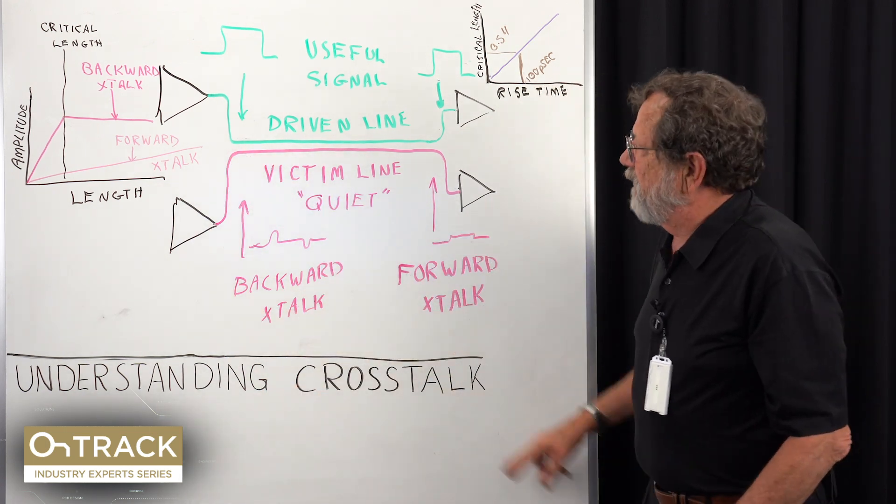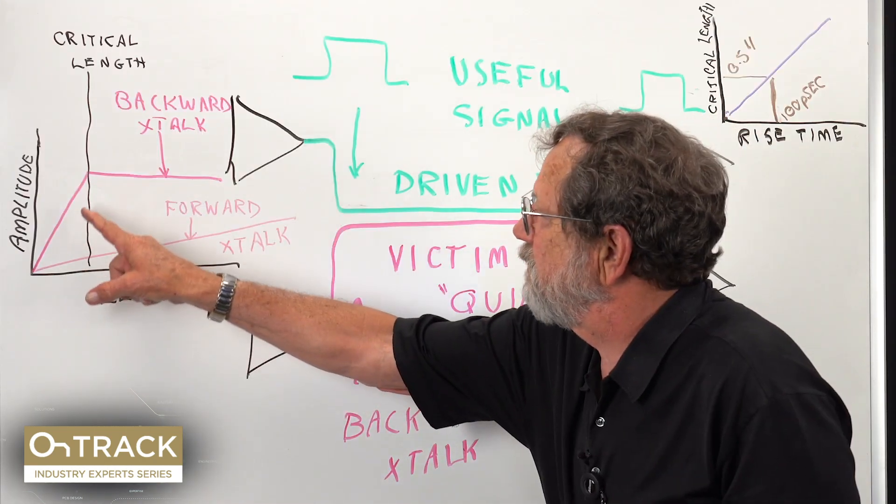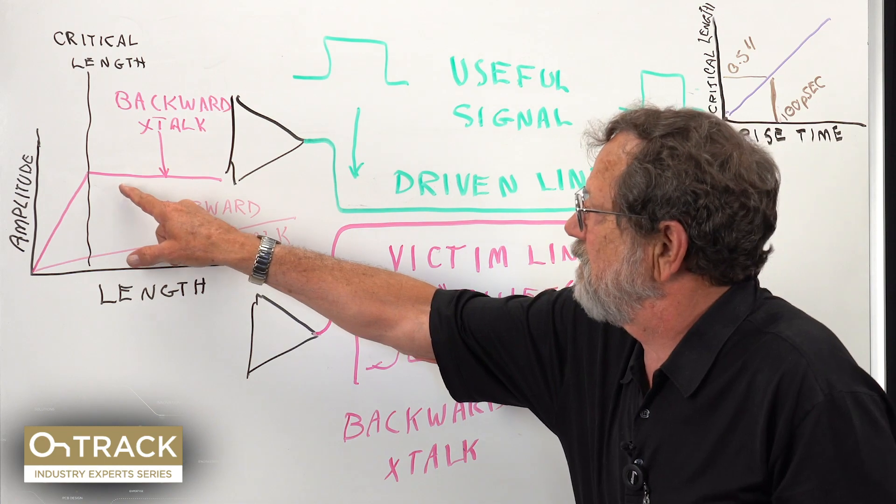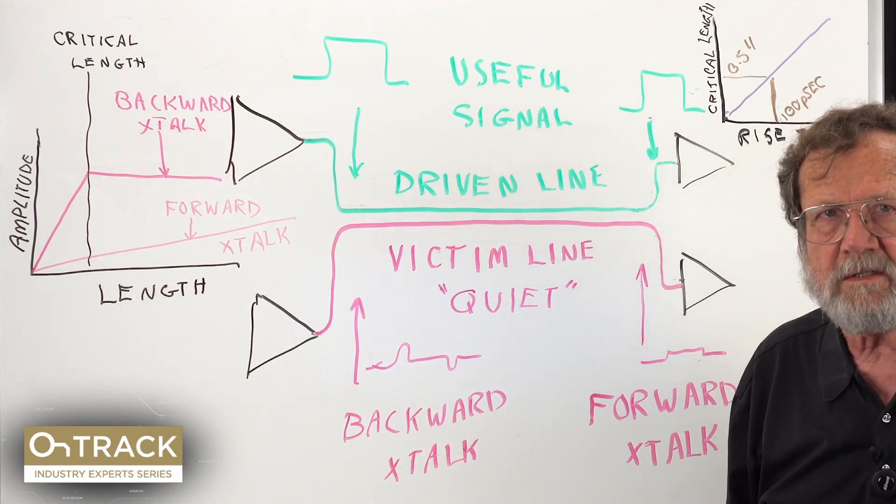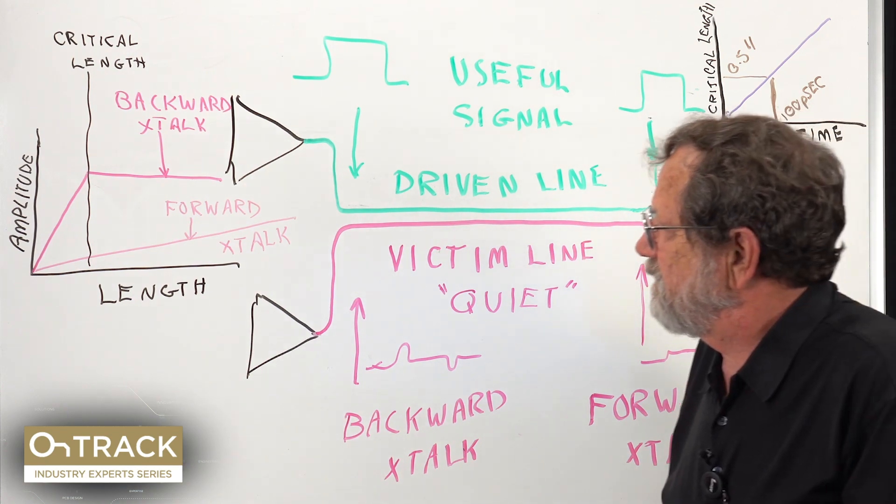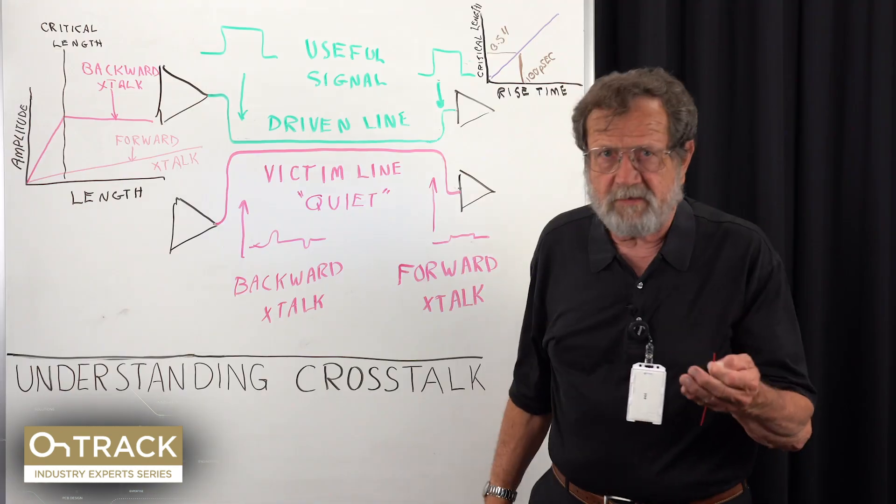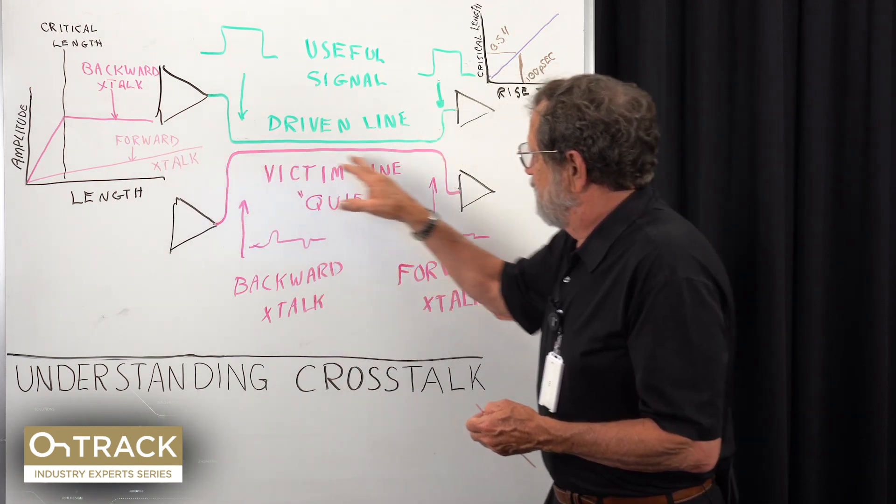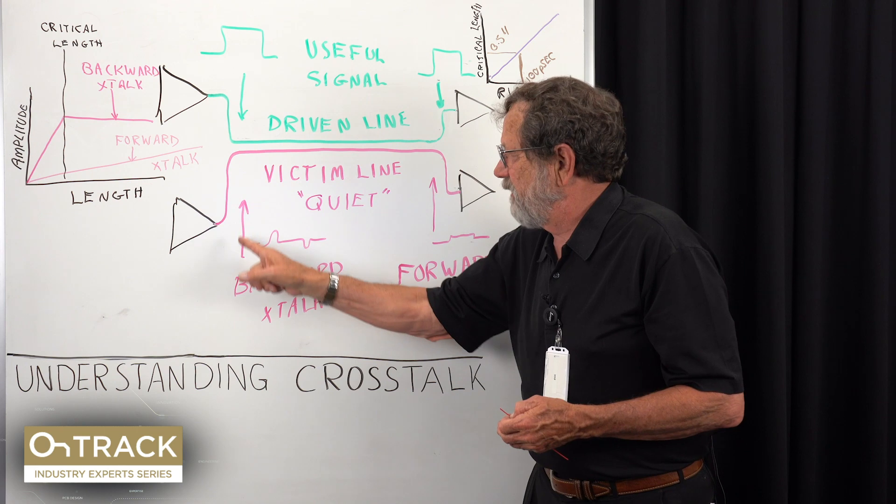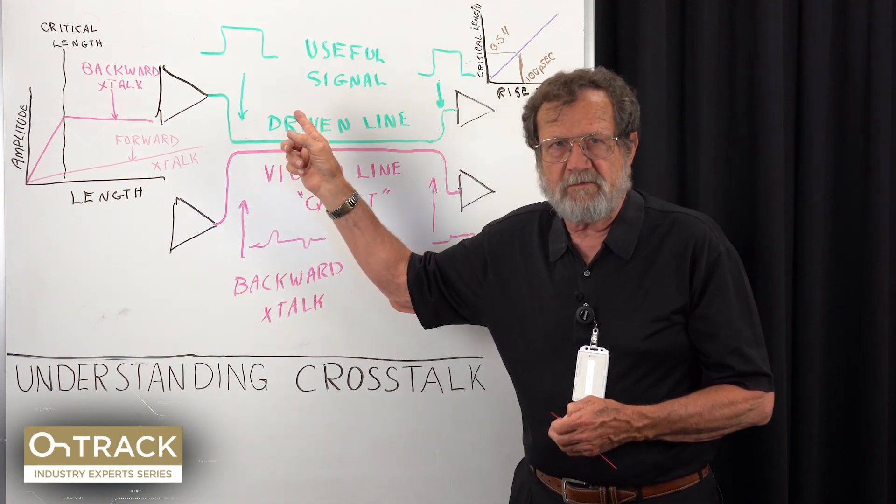The other backward crosstalk is very different. It grows much more quickly, but there comes a point where continuing to run parallel does not result in any more crosstalk. RF engineers use this phenomenon with a directional coupler, where we use a victim line like this to sample and measure the power level in the driven line.